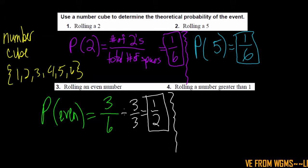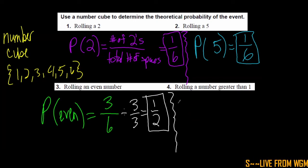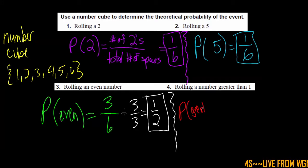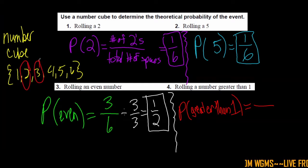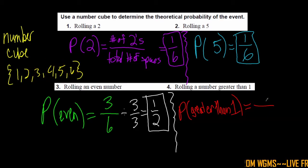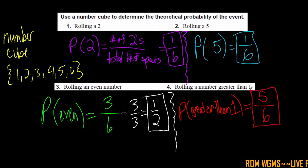Now my last example on this one: rolling a number greater than one. The probability of rolling a number greater than one — let's count out the numbers greater than one. That would be two, three, four, five, or six — five numbers that are greater than one. So in our numerator it's going to be five, and in our denominator it is the total number of spaces, which is six. So our probability is just going to be five over six.